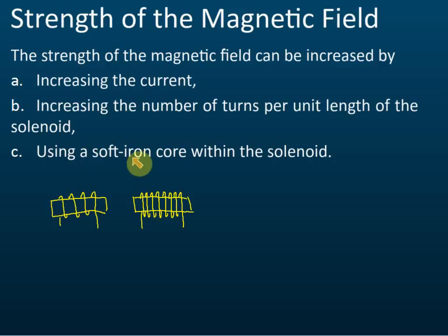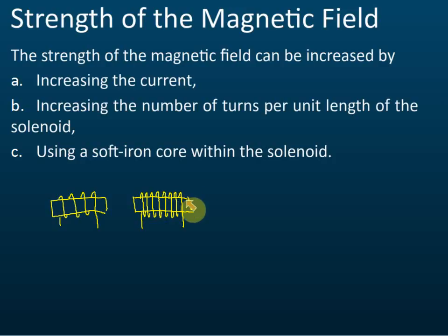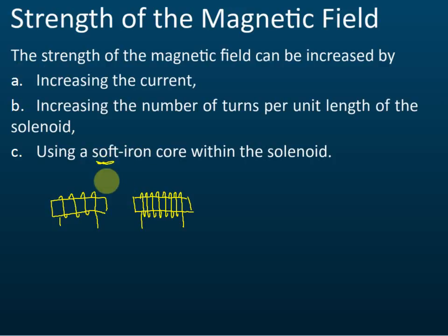The third factor is using a soft iron core within the solenoid. You can see there's a bar here - this is the iron core. If you insert an iron core inside the solenoid, the solenoid makes the iron core a magnet. Now there are two magnets - the solenoid and the iron core - and their magnetic fields combine to make the field very strong. Out of these three factors, the iron core is the most important factor affecting the strength of the field.